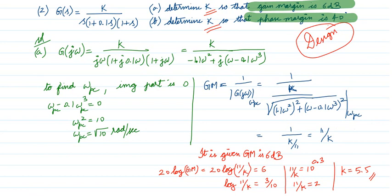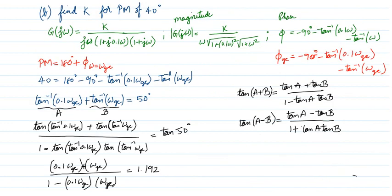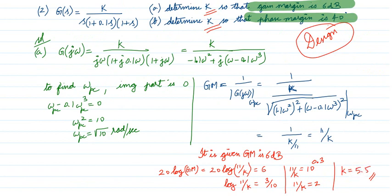The problem states gain margin = 6 dB. Express the gain margin in decibels: 20·log(11/k) = 6 dB. Divide both sides by 20 to get log(11/k) = 0.3. Taking the antilog: 11/k = 10^0.3 = 2. Therefore k = 11/2 = 5.5. If k = 5.5, the gain margin will be 6 dB.